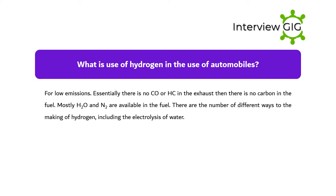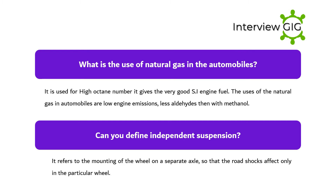What is the use of hydrogen in automobiles? For low emissions, essentially there is no CO or HC in the exhaust. There is no carbon in the fuel; mostly H2O and N2 are available in the exhaust. There are a number of different ways to produce hydrogen, including the electrolysis of water.